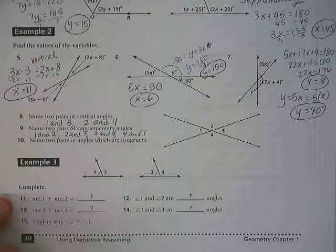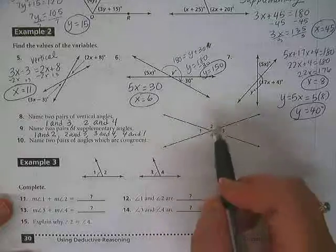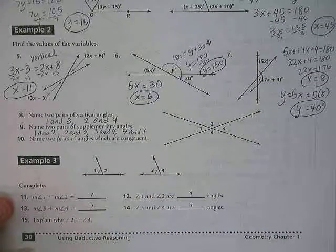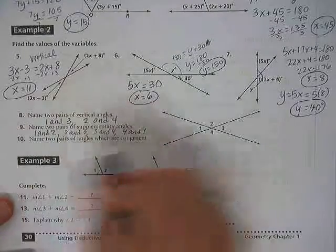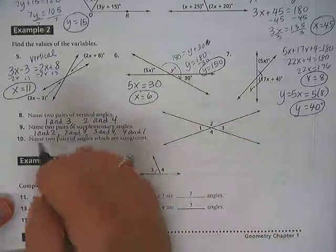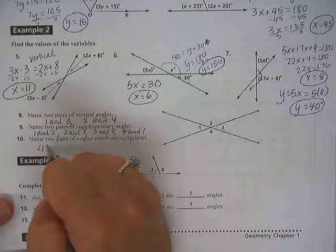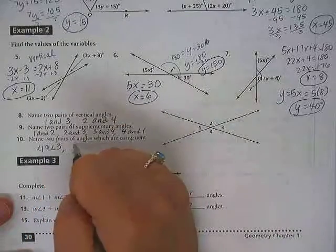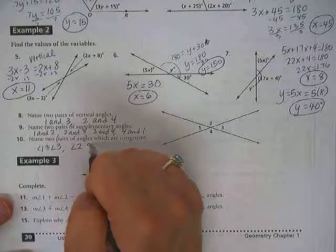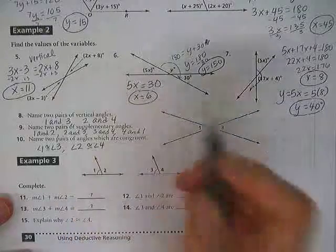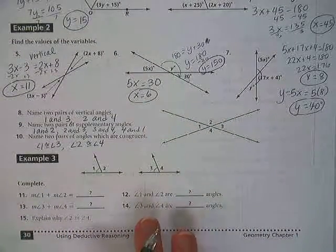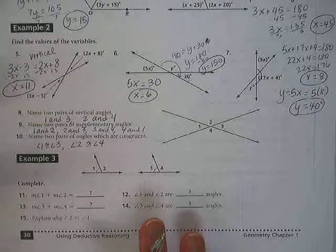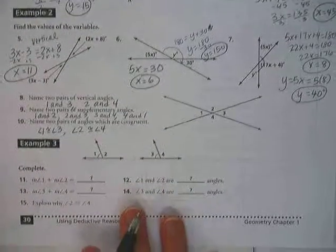Okay, now number 10, name two pairs of angles which are congruent. Okay, they're the same answers as number 8, aren't they? The vertical angles are the ones that are congruent. So whatever your answers were on number 8, that's the same answer. So angle 1 is congruent to angle 3 because those are vertical. And angle 2 is congruent to angle 4 because those are vertical. All right, I wrote that a little bit different way. Okay, do we get that? We're able to identify these all right?